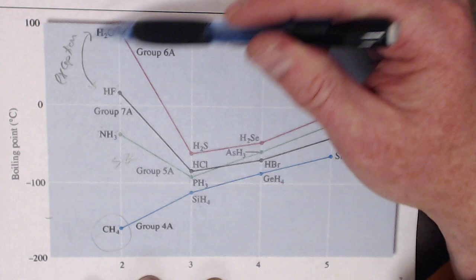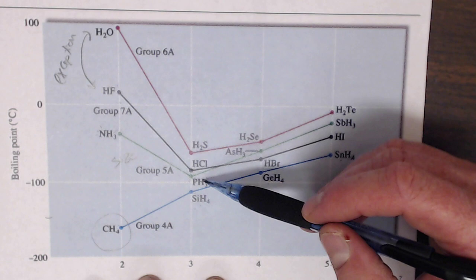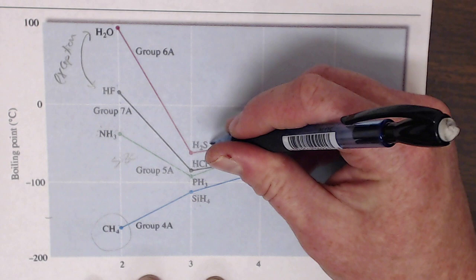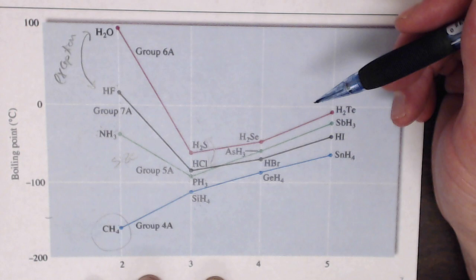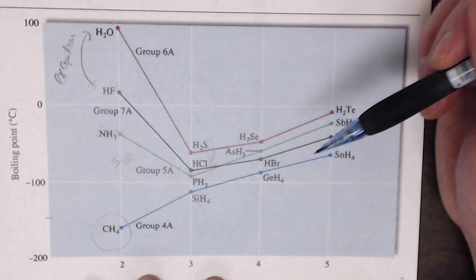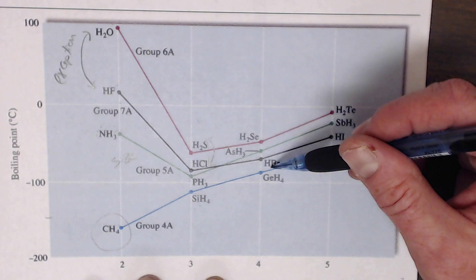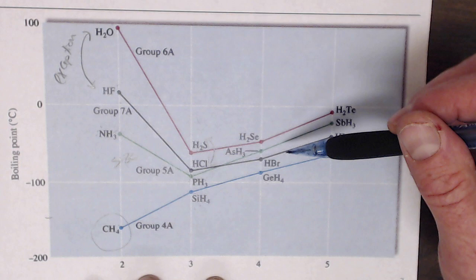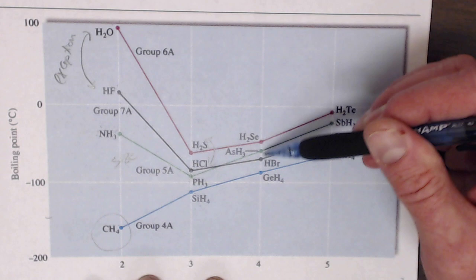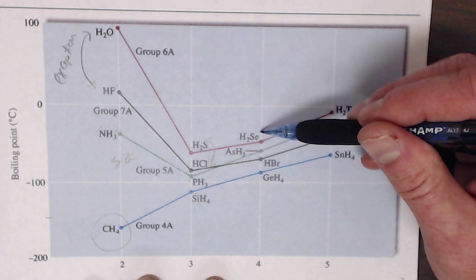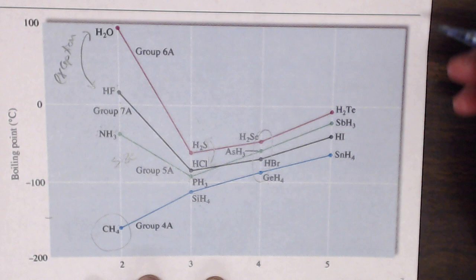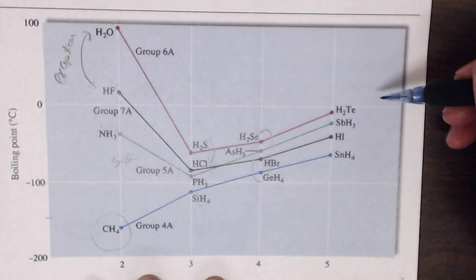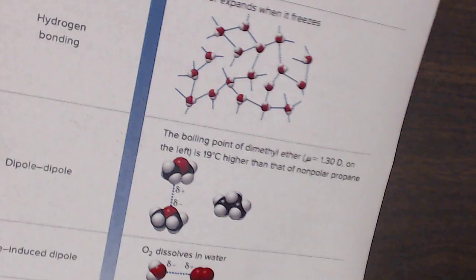Continuing along, there's another instance where we expect sulfur to have a lower boiling point than chlorine, but it's the opposite — H2S can make more hydrogen bonds than HCl. Moving to the next trend, there are exceptions within exceptions, such as HBr not being the highest. The general trend is still present. The final row mirrors the same pattern seen with water, fluorine, nitrogen, and carbon.